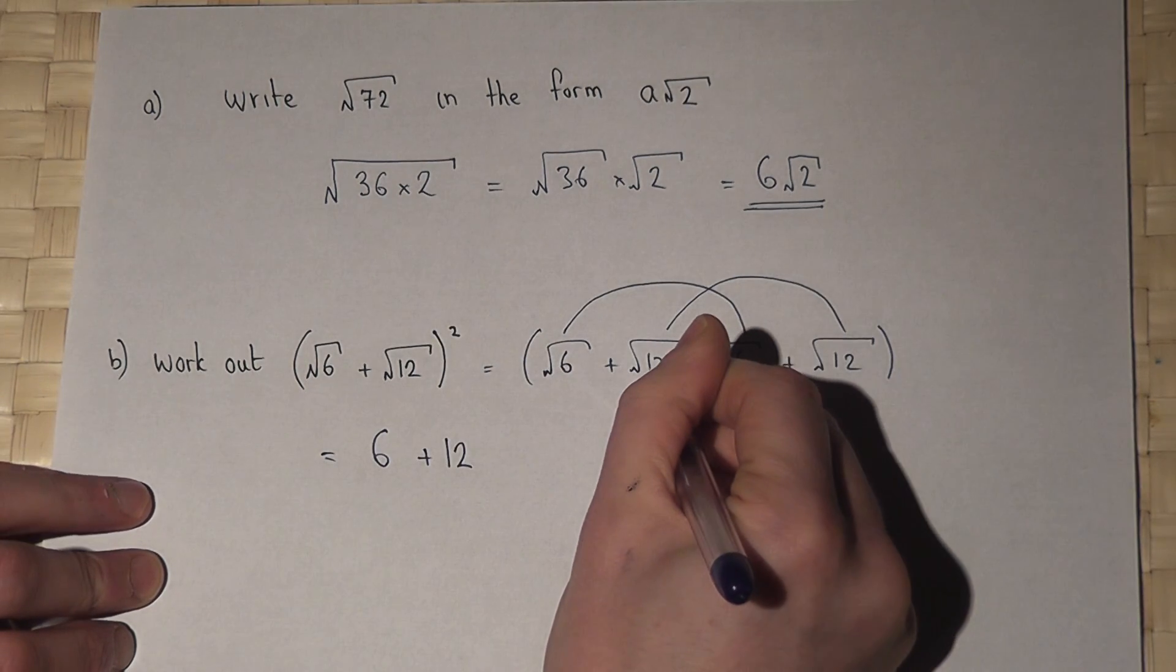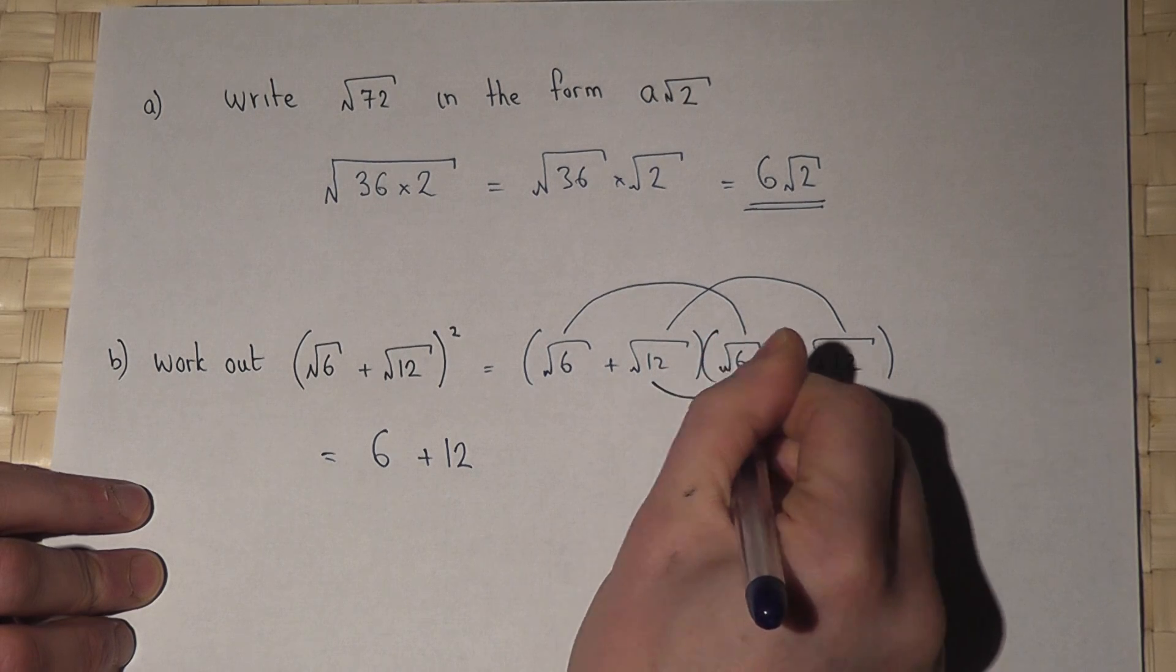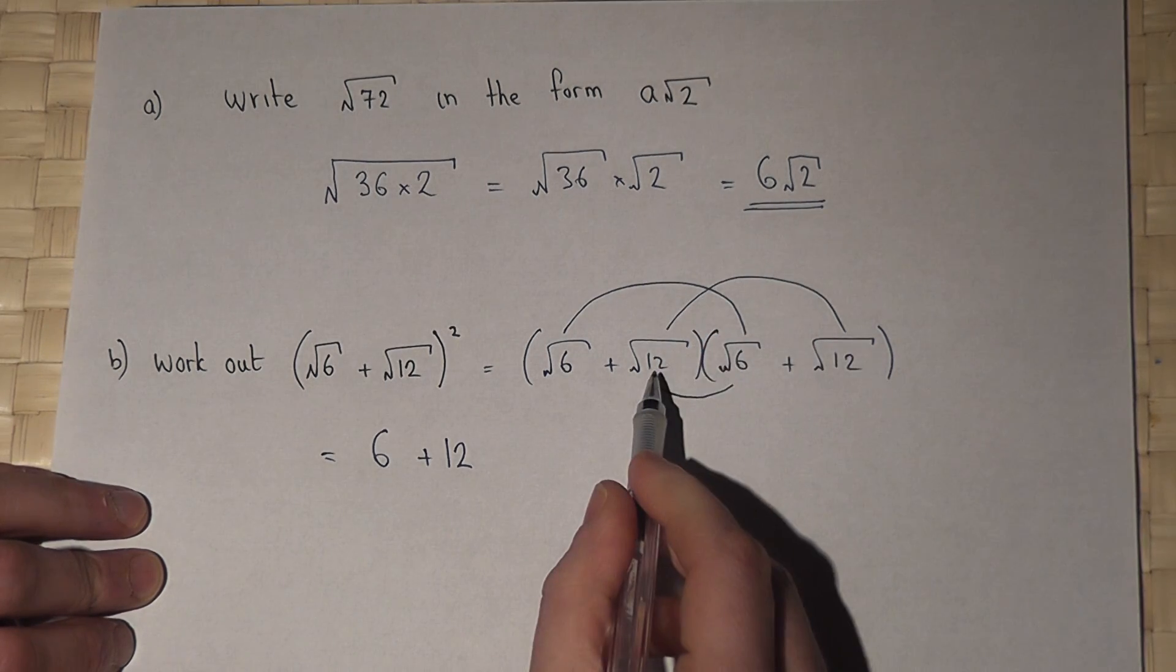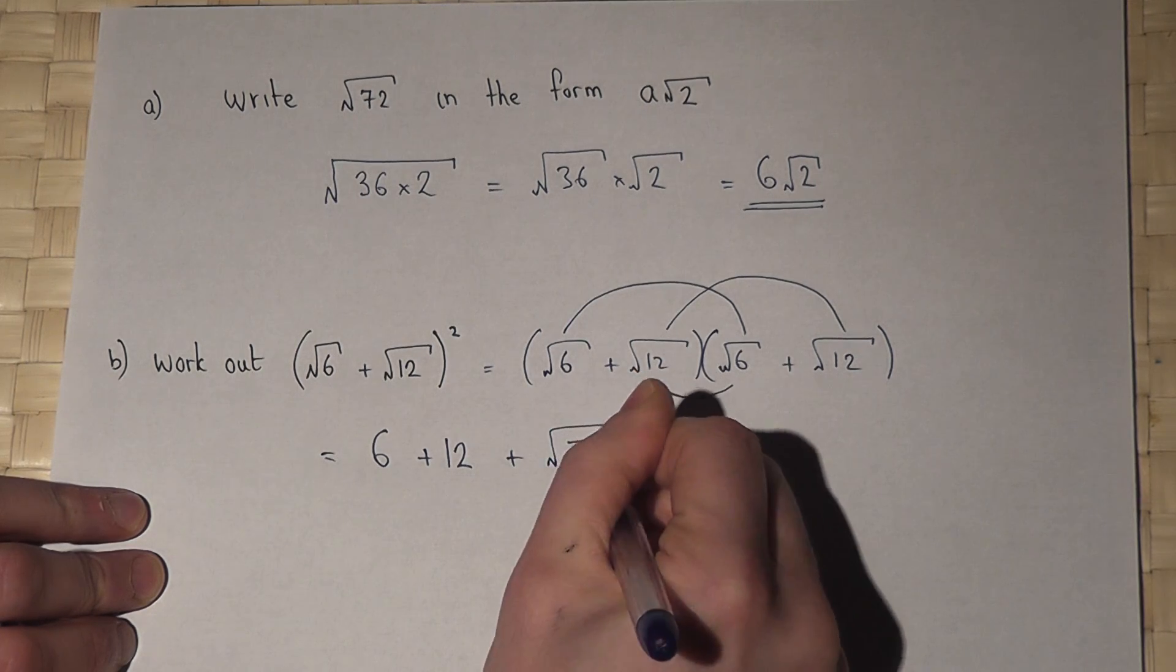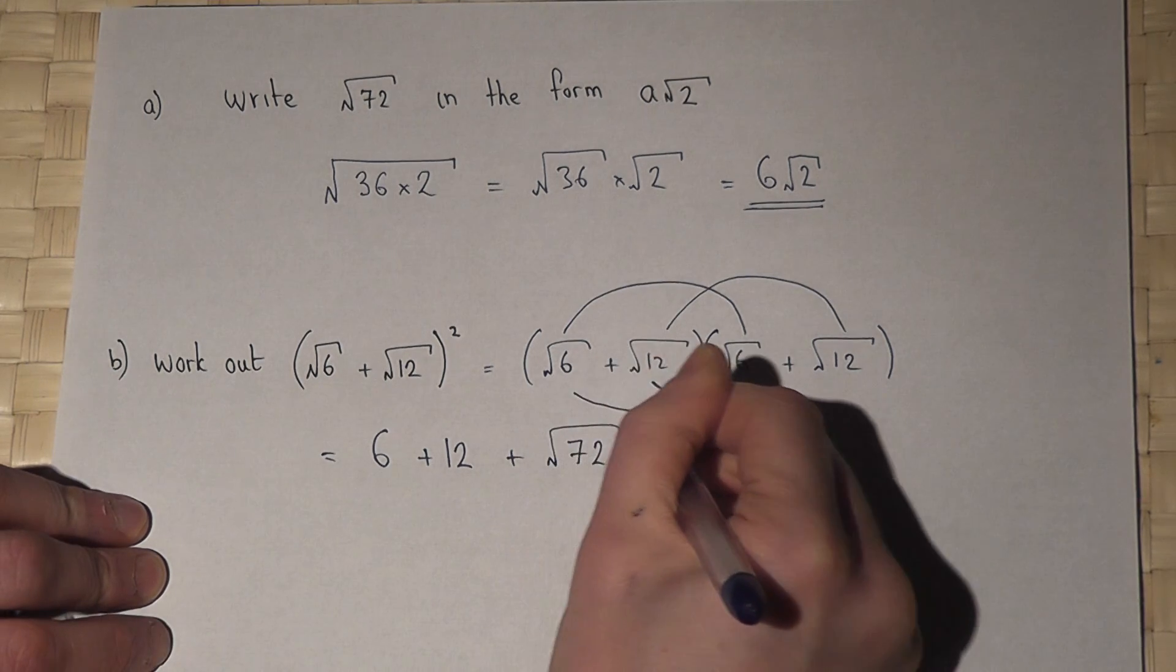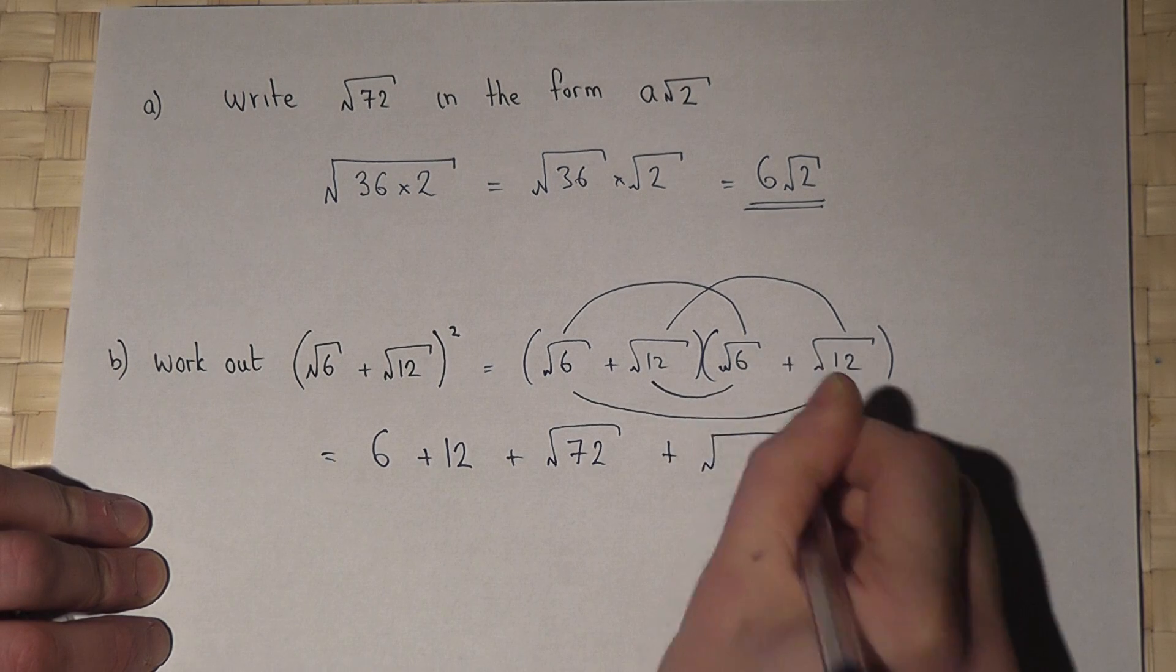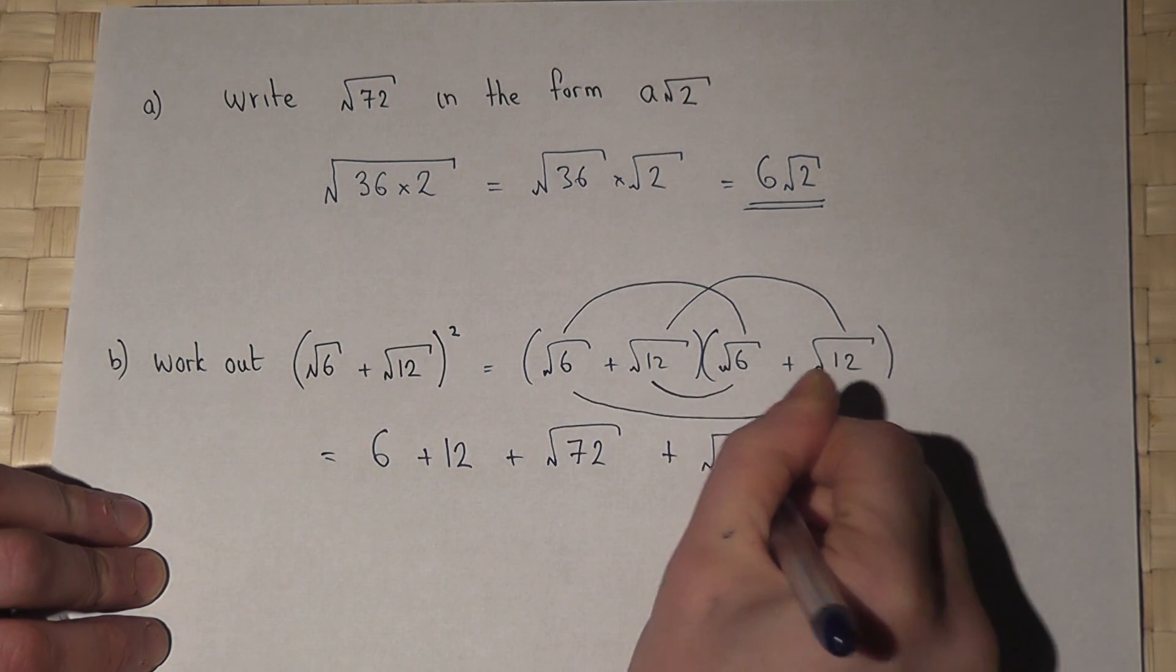However, root of 12 times root of 6, 6 times 12 is 72. That just becomes root of 72. Similarly, that becomes root of 6 times 12, root 72.